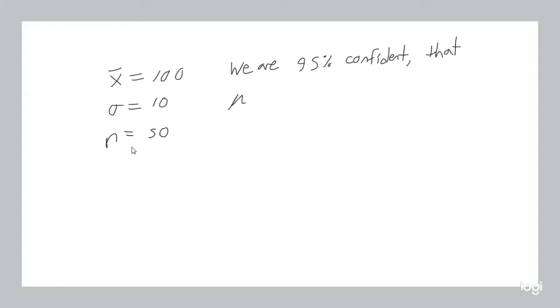that mu, the population mean, is within some margin of error of our sample mean. Is within some bound of 100. We want to know what that bound is.